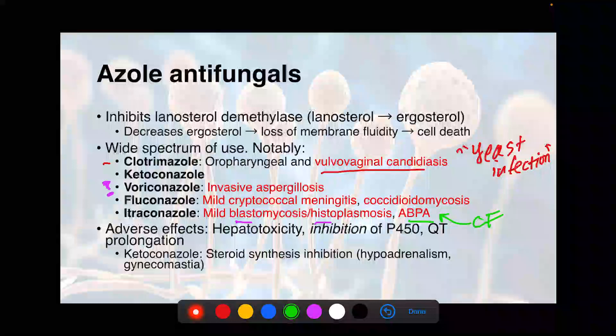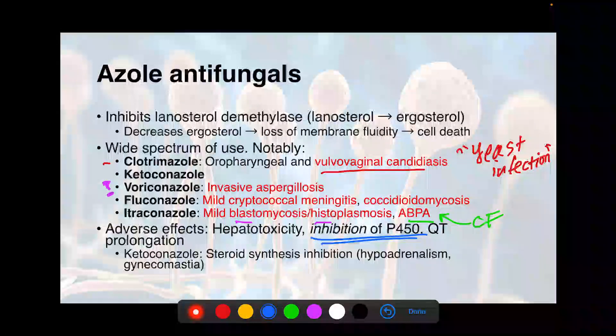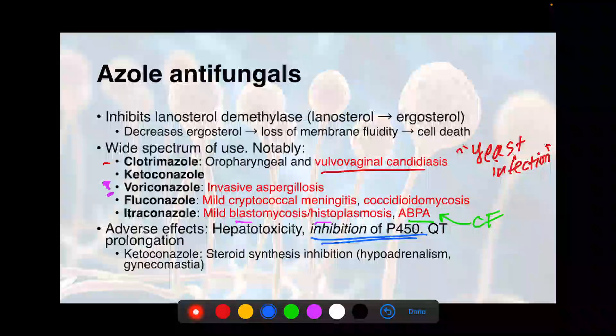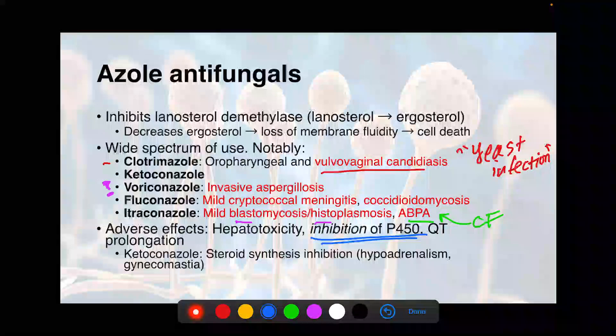The adverse effects for the azole antifungals — the big one is that it inhibits the P450 enzymes. You need to take that under advisement, because if the patient is on certain other medications, it could increase the levels of those medications, in particular coumadin. Ketoconazole is of note because it inhibits steroid synthesis — it can cause hypoadrenalism by reducing cortisol, and it can cause gynecomastia by inhibiting the production of androgens.